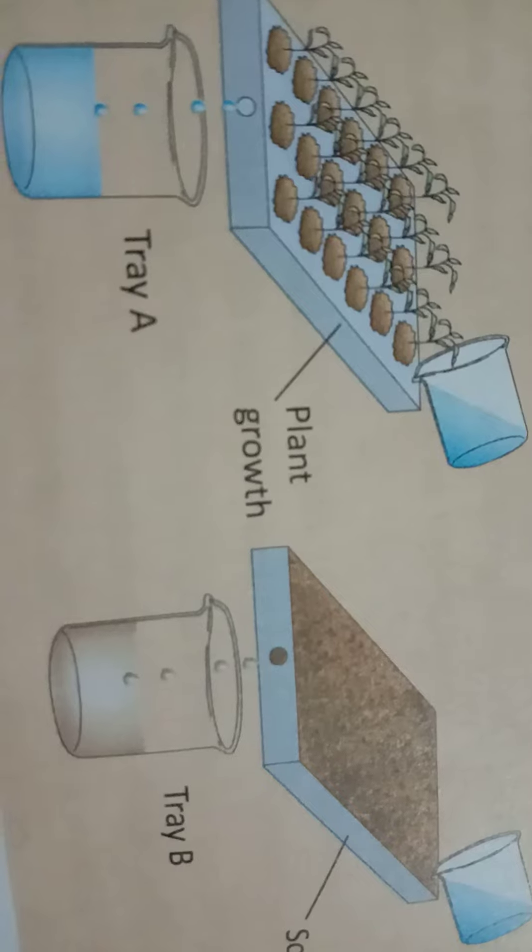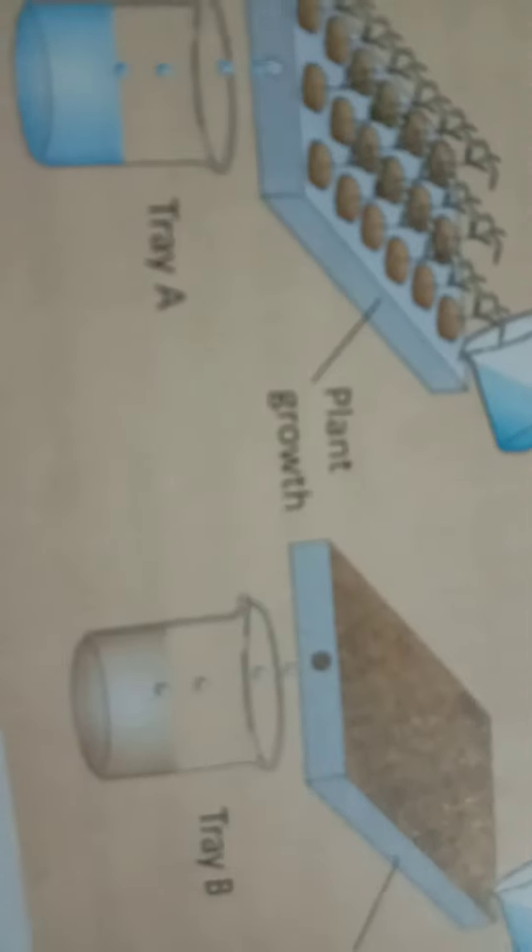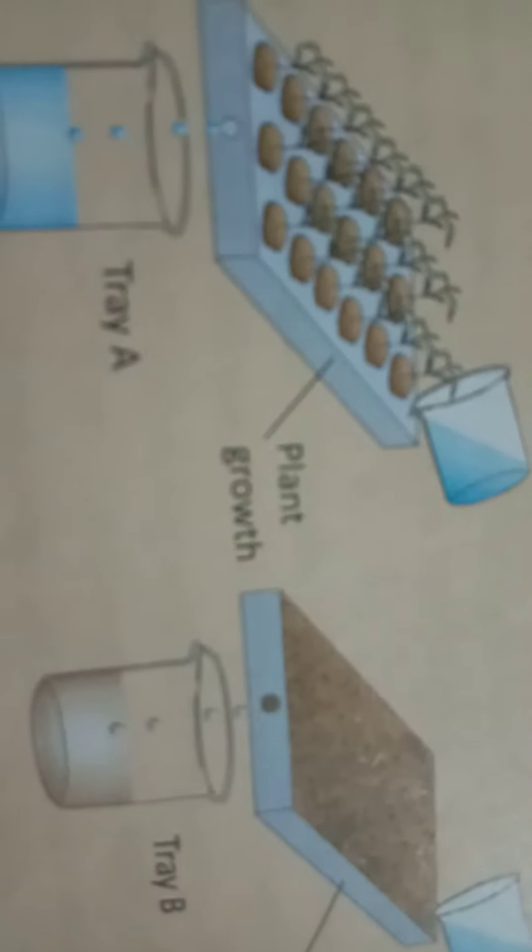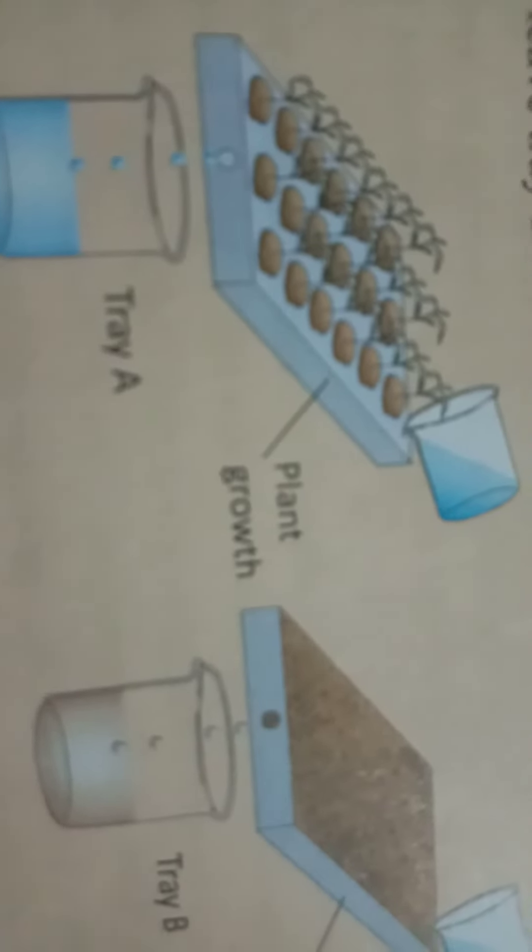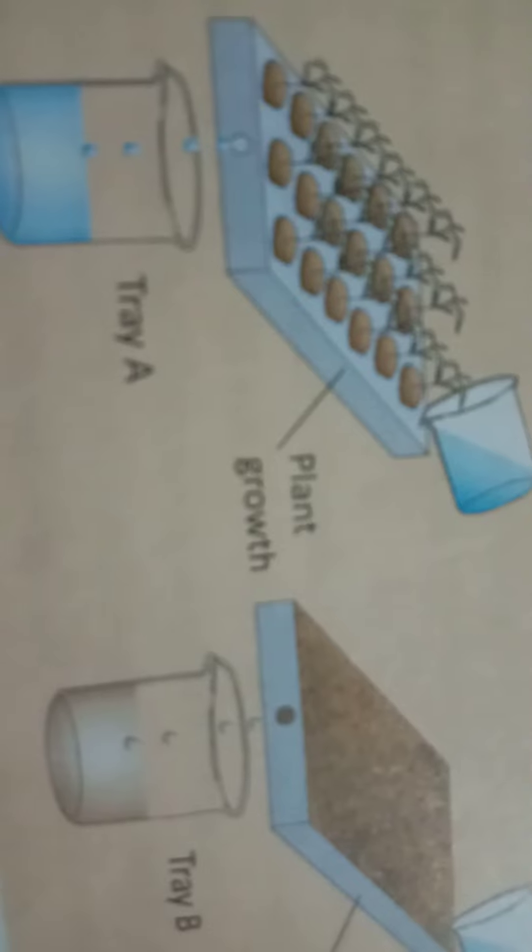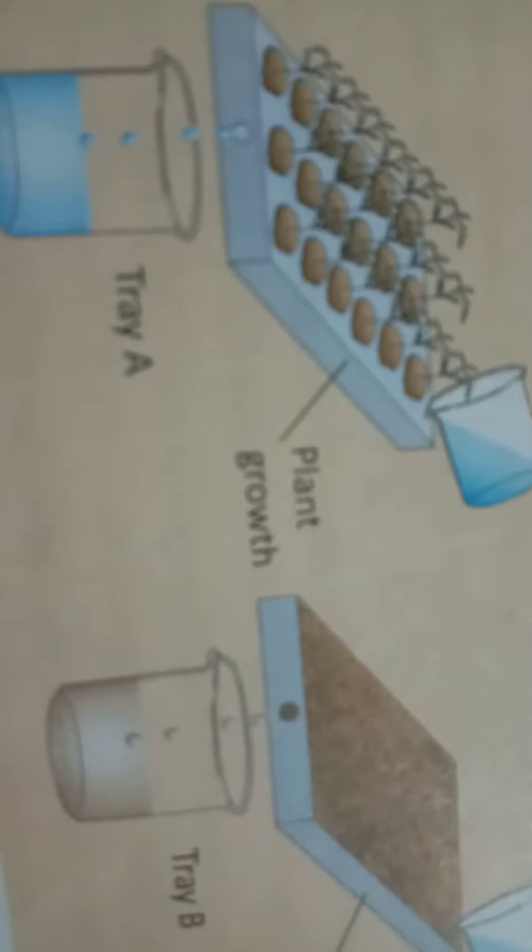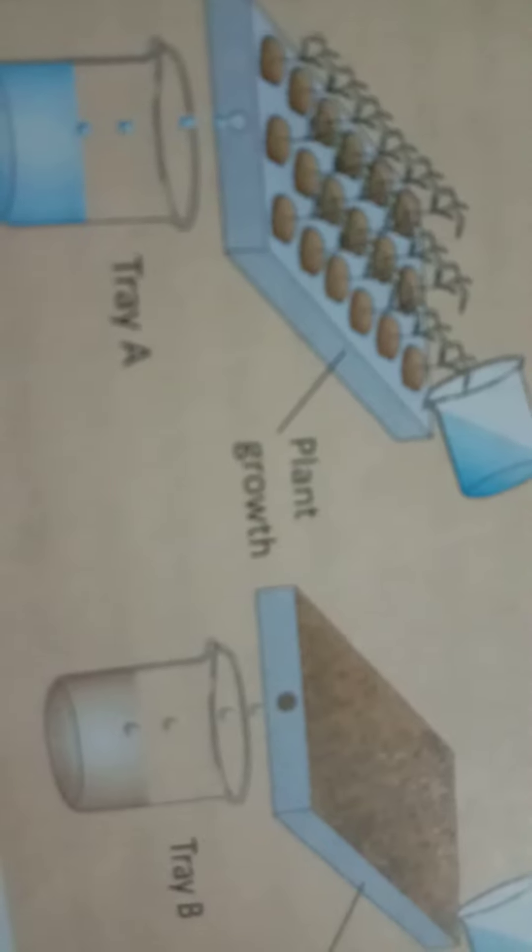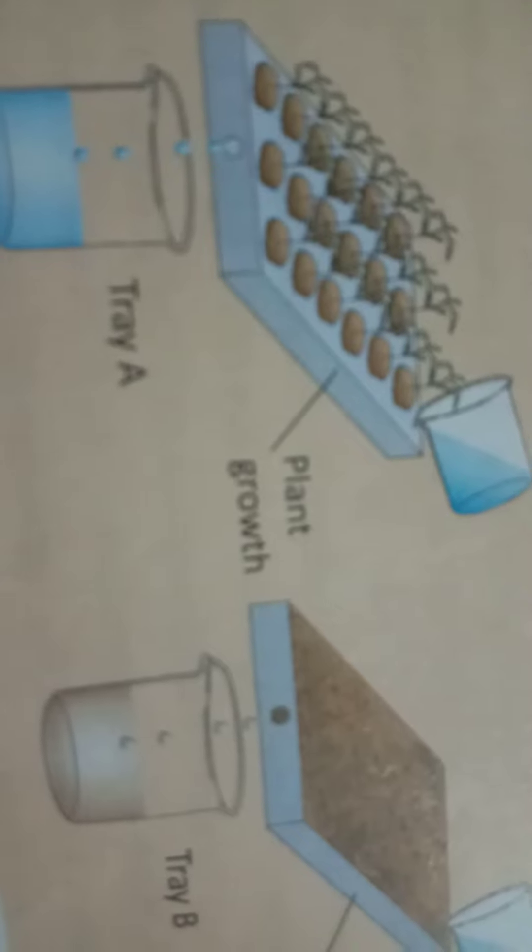From tray B. So you have now known that plants bind soil particles. It means plants prevent soil erosion. In tray A, small plants bind the soil and prevent soil erosion. But in tray B, no plants, so soil particles fall in beaker B.